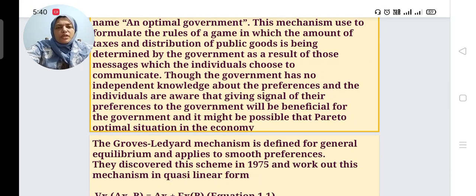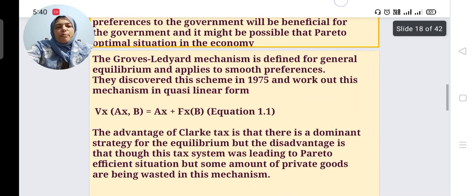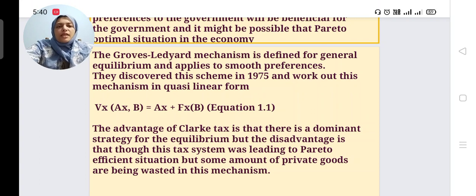Though the government has no independent knowledge about the preferences, and the individuals are aware that giving signals of their preferences to the government will be beneficial for the government and it might be possible that Pareto optimal situation in the economy. The Groves-Ledyard mechanism is defined for general equilibrium and applies to smooth preference.